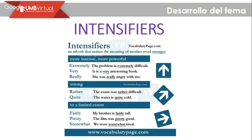Intensifiers are words that give a much stronger connotation to another word. This grammar topic focuses on when you really want to emphasize one action. For example, an adverb as an intensifier makes the meaning of another word stronger — because you really want to say that something is extremely difficult, very interesting, or very angry. In English, we need to use the correct grammar and coherence when constructing these sentences.